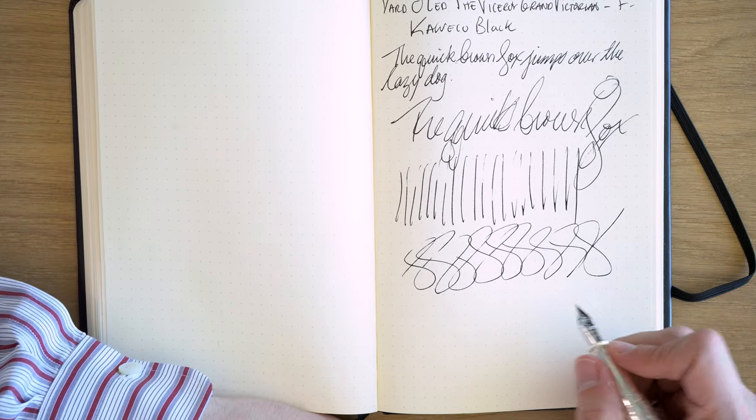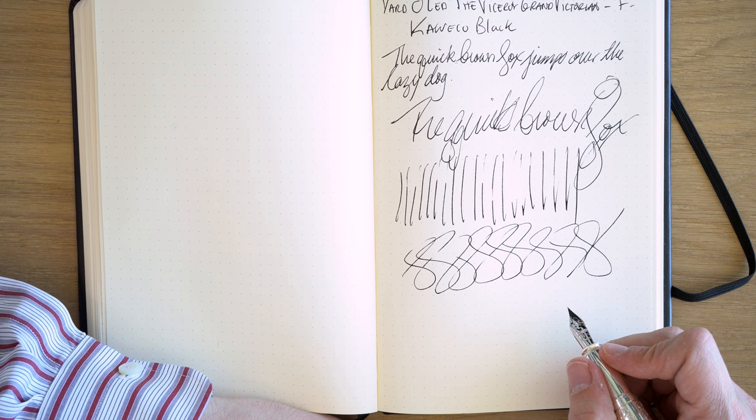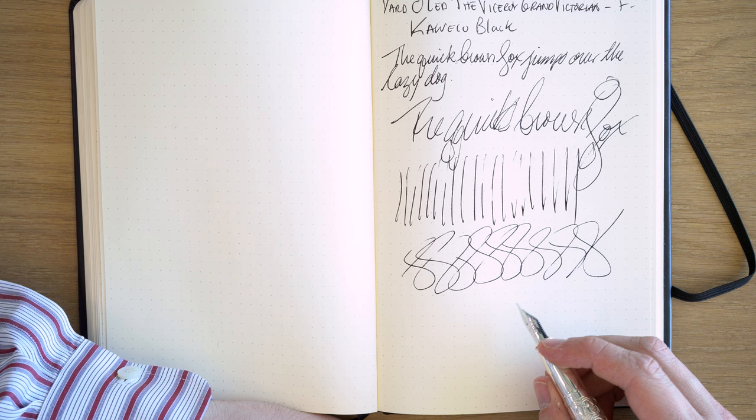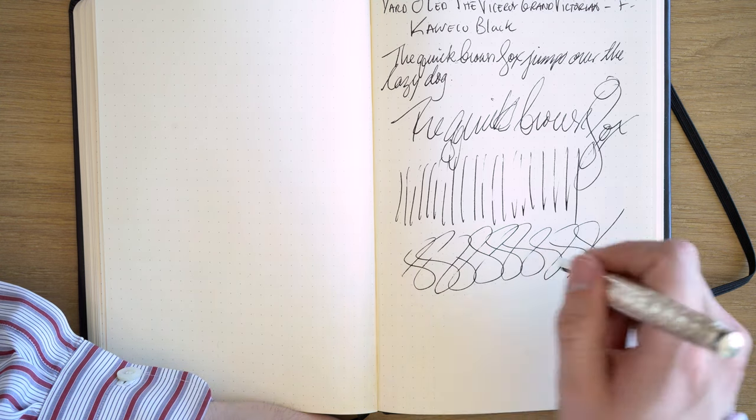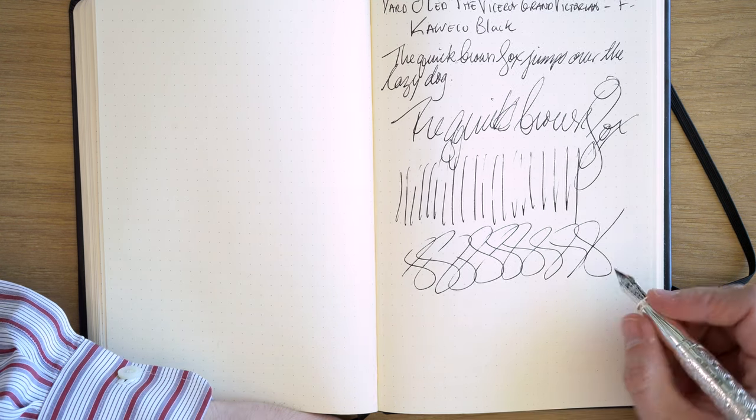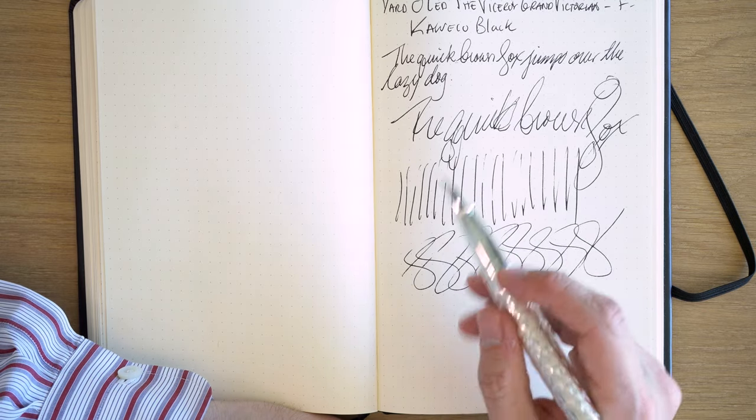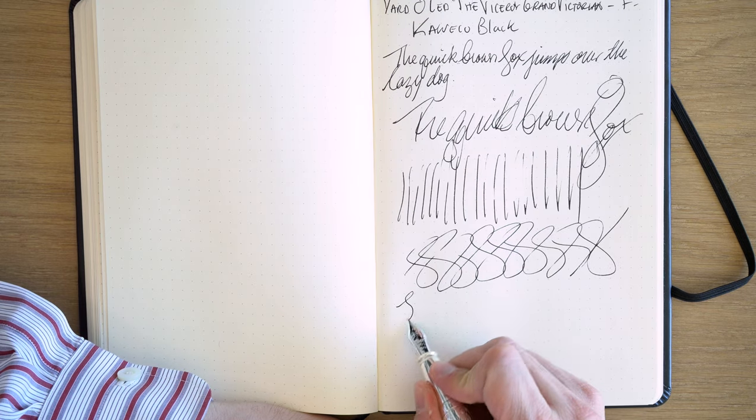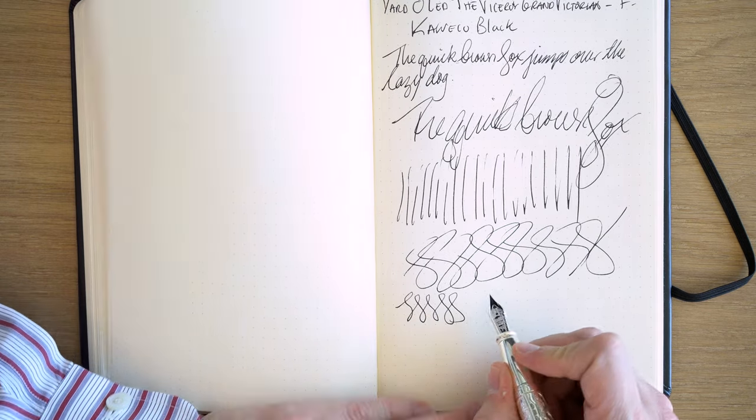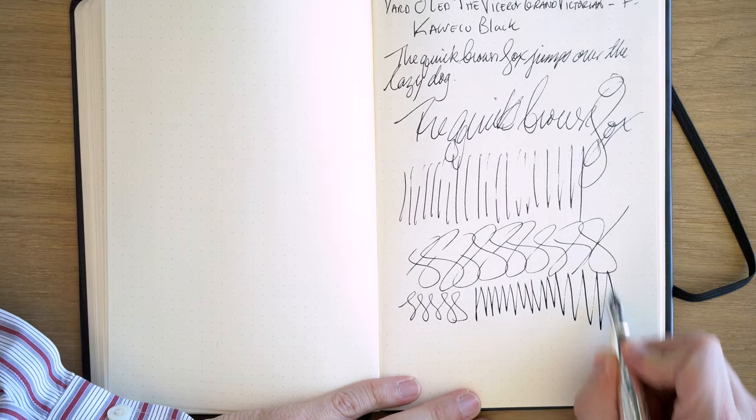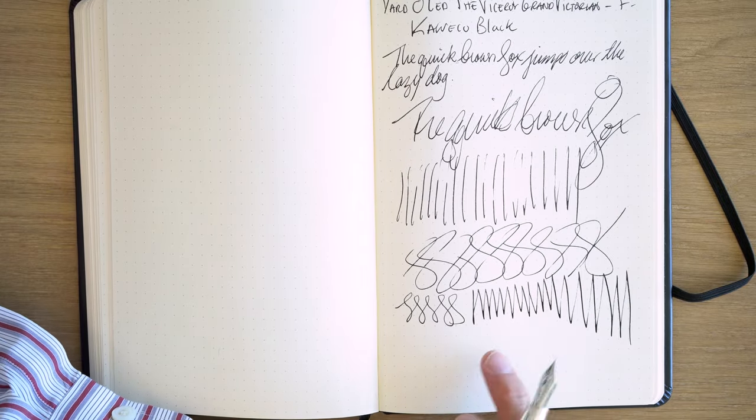It's not something that I would have addressed by a nibmeister where there are some pens where they have a hard time stopping or they'll skip in between when you end a line here and then you start over here, it'll skip, that drives me nuts. But this is just the feed for whatever reason is not quite keeping up when you go really, really fast. But normal writing, it's not an issue and I love writing with this pen.